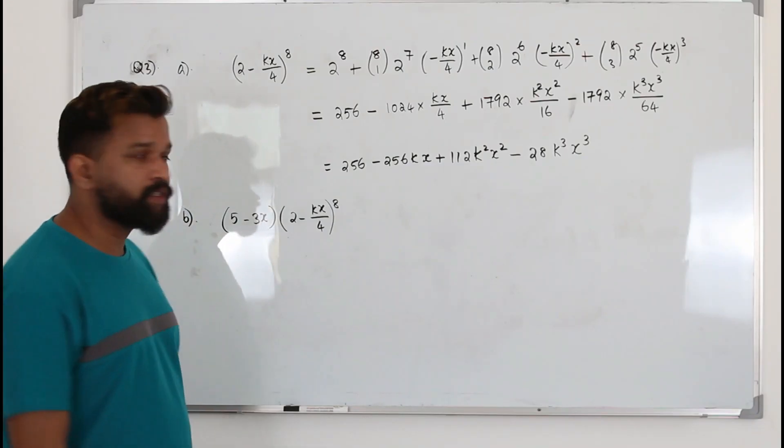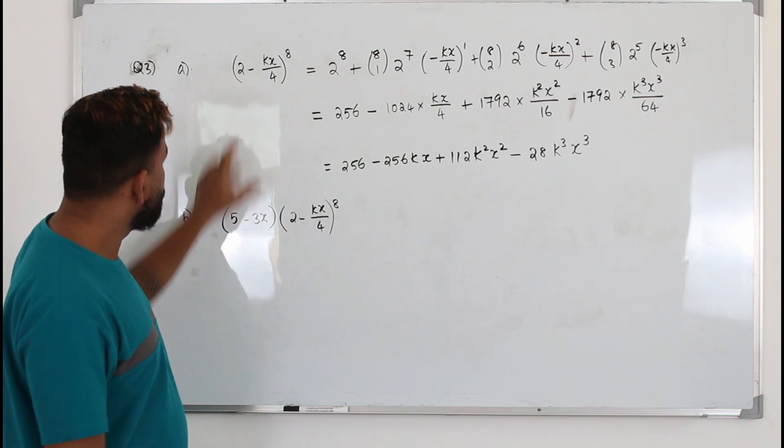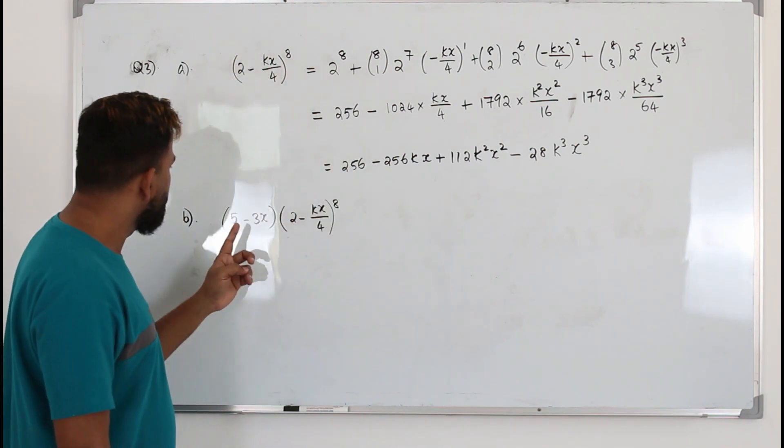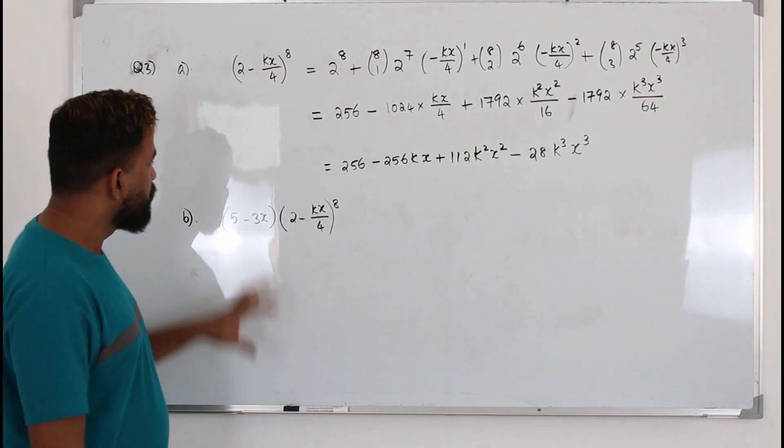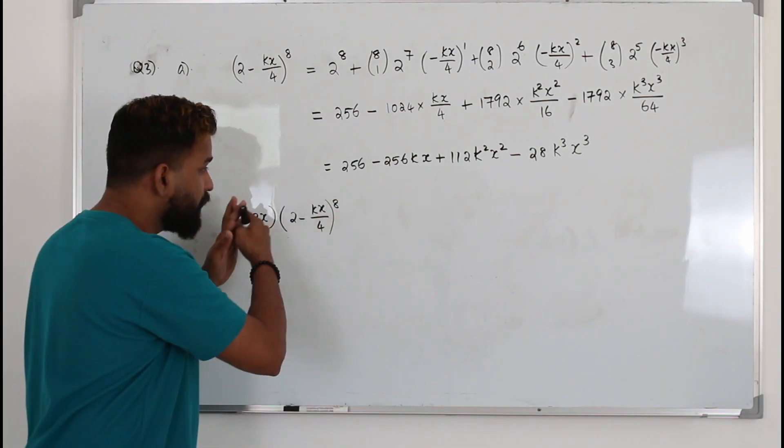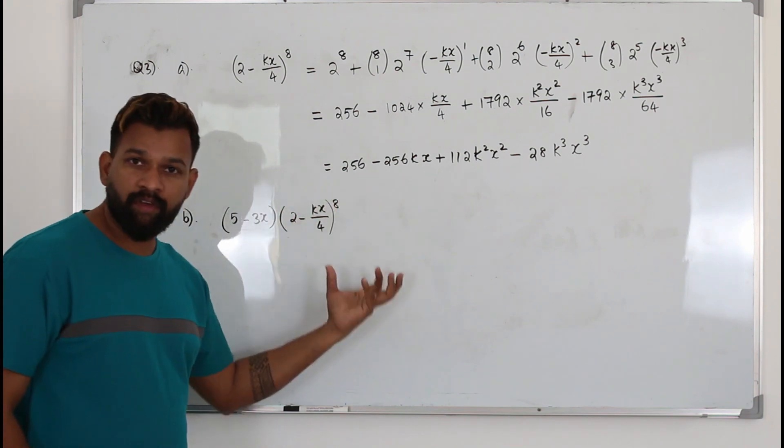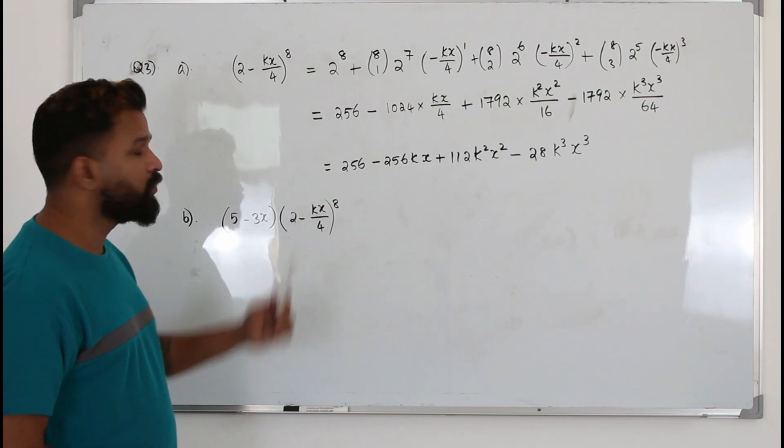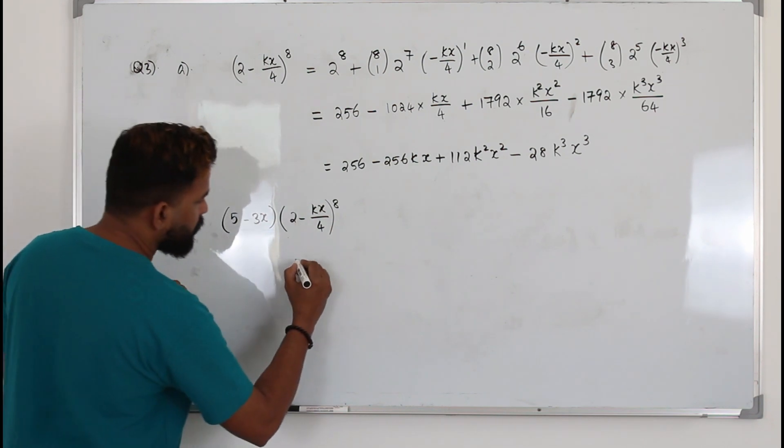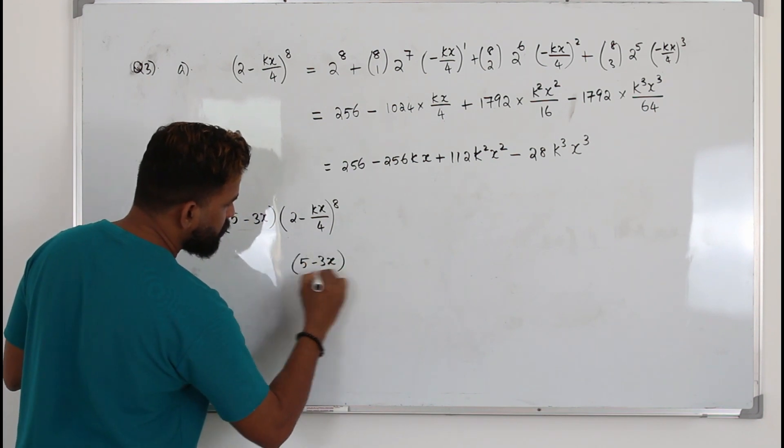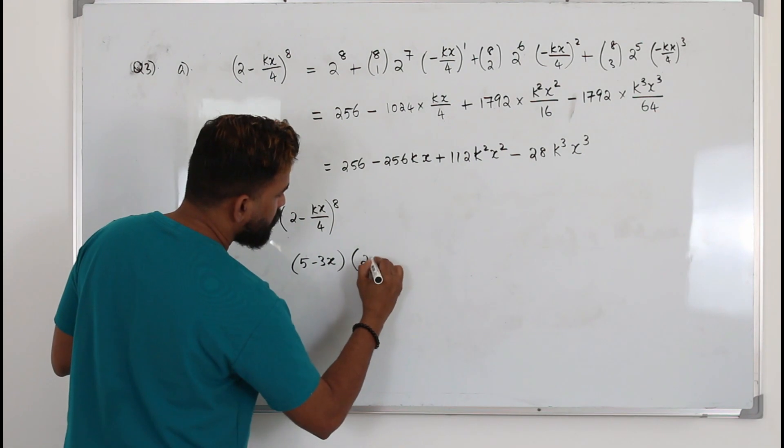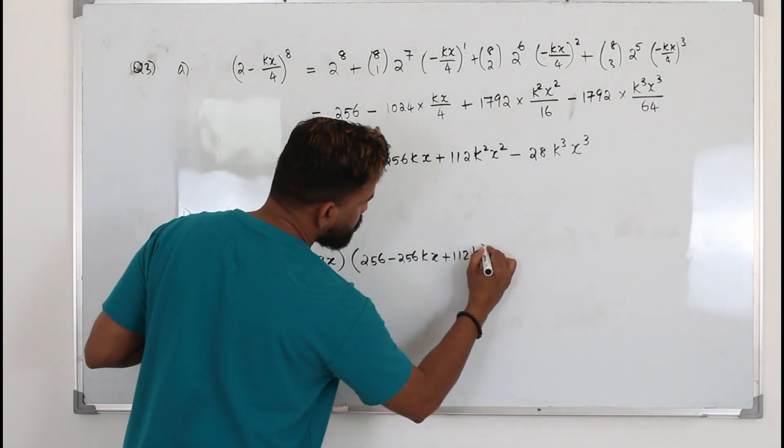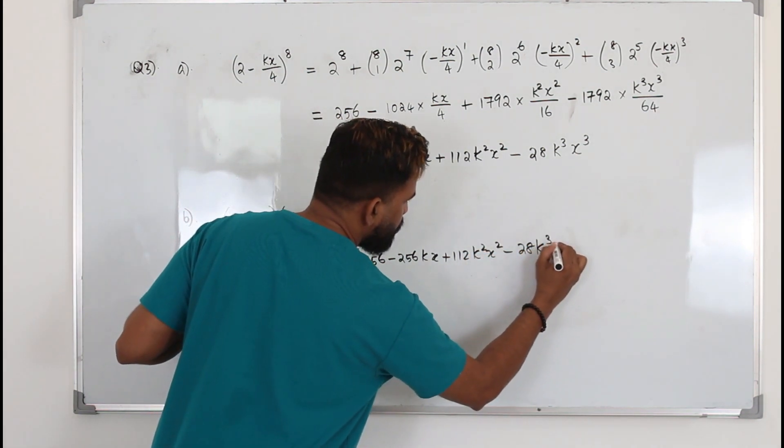Look at the part B question. It says you have a new function, but apparently they have used this binomial expansion here. We are going to use the binomial expansion here, and there is an extra expression here. Here it says, when you open the bracket and multiply everything, the constant term you get is 3 times the coefficient of x. They want you to find the value of k now. So first step, write (5 - 3x) as it is. Instead of this, use the expansion: 256 - 256kx + 112k^2x^2 - 28k^3x^3.